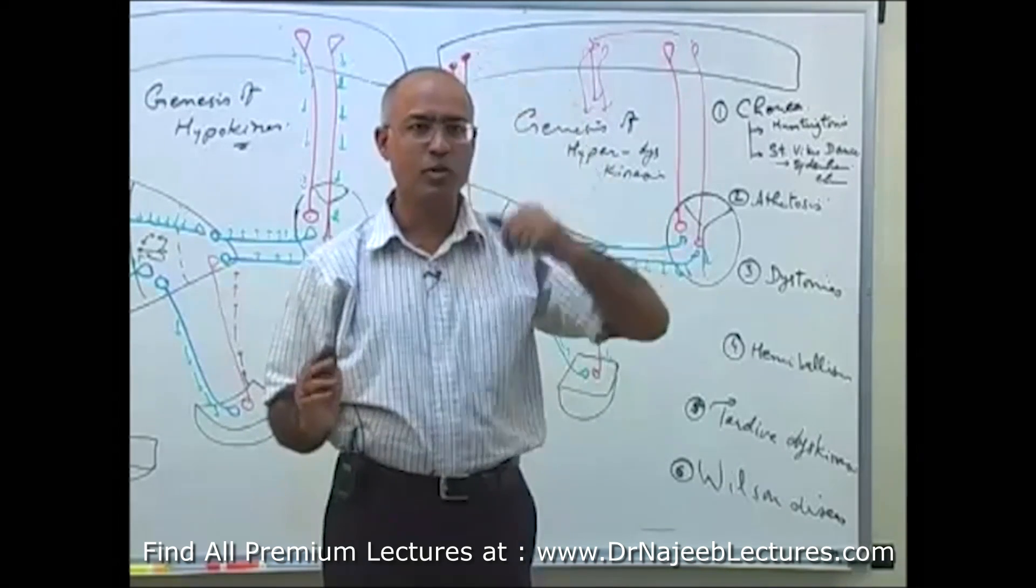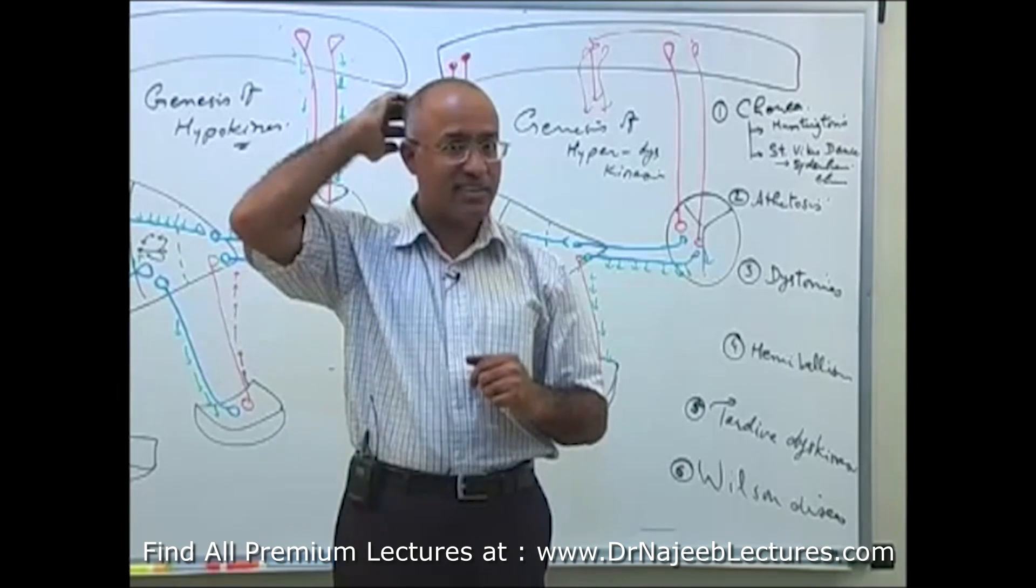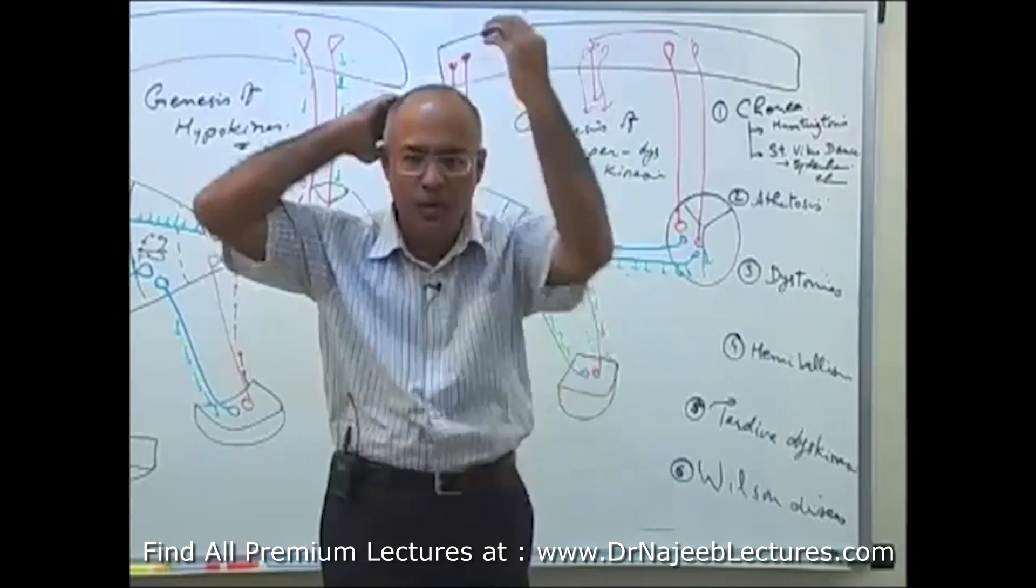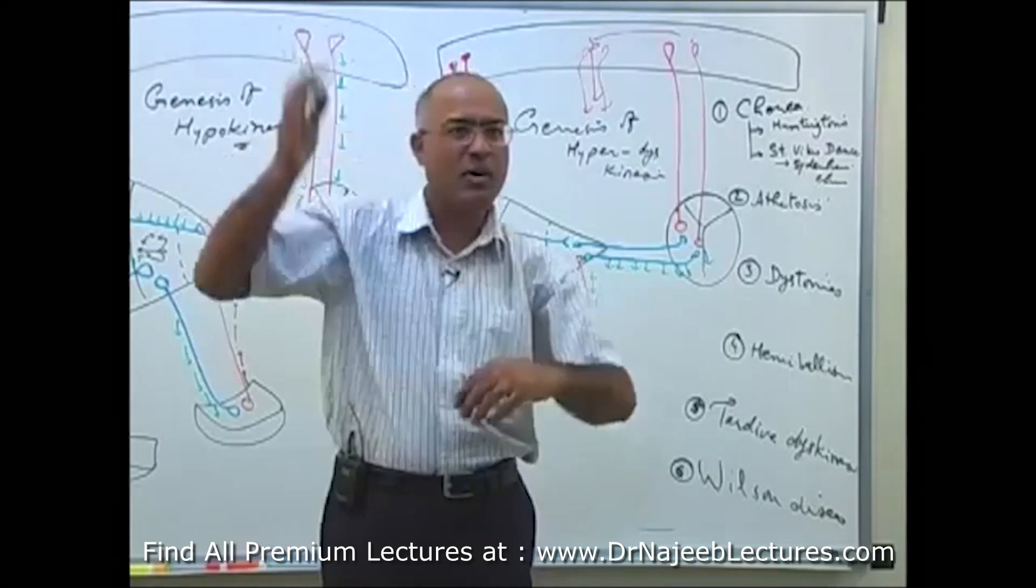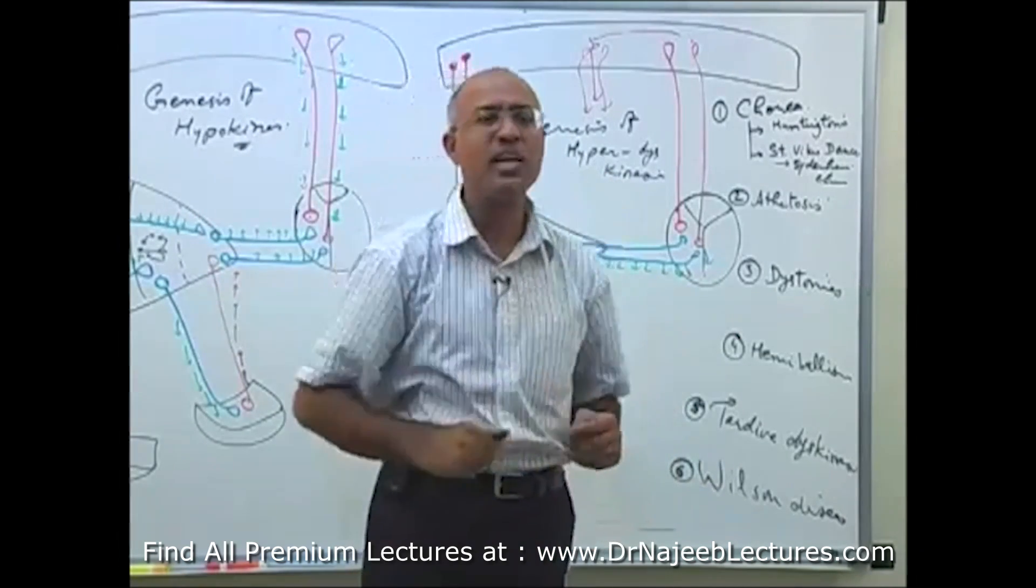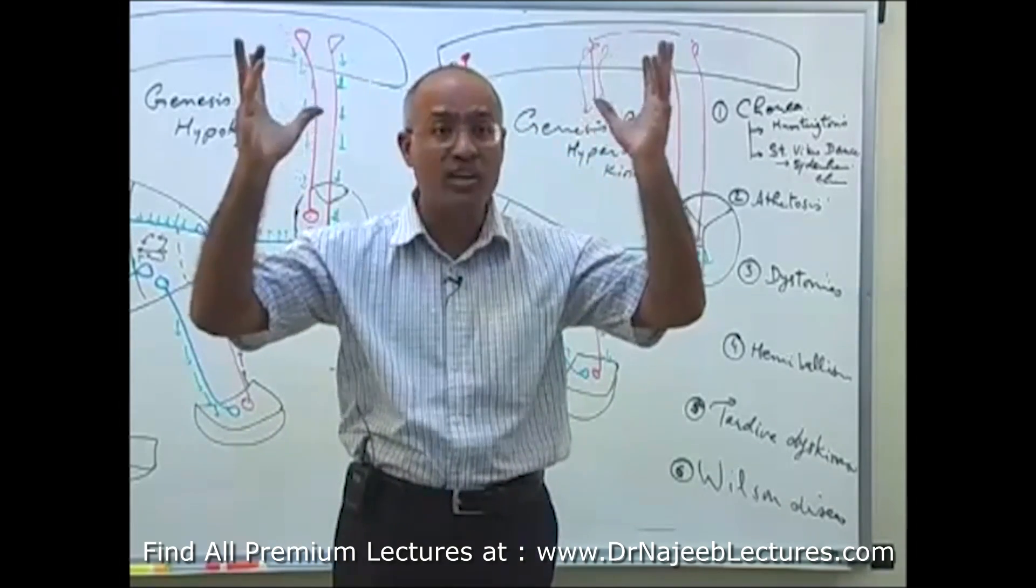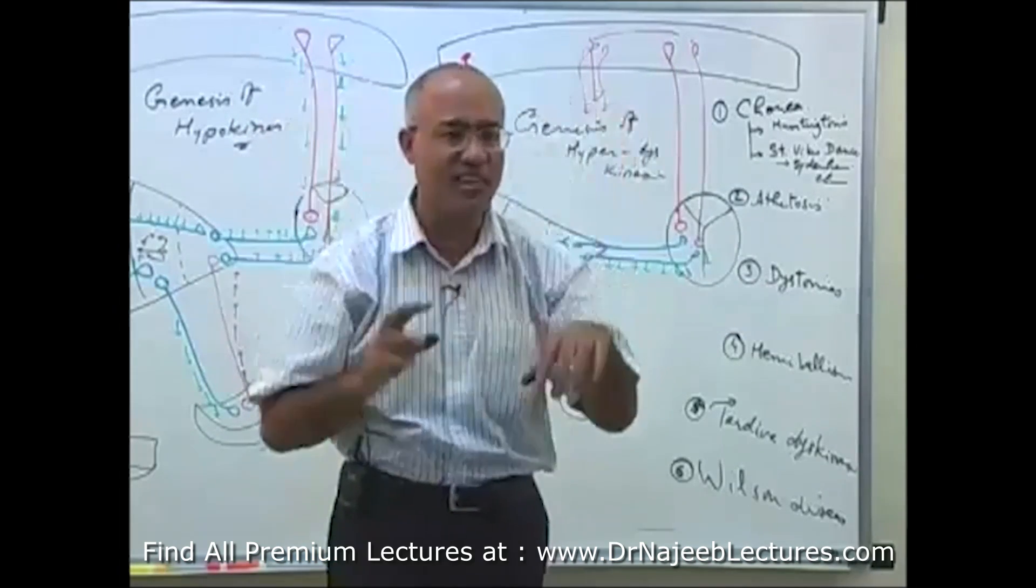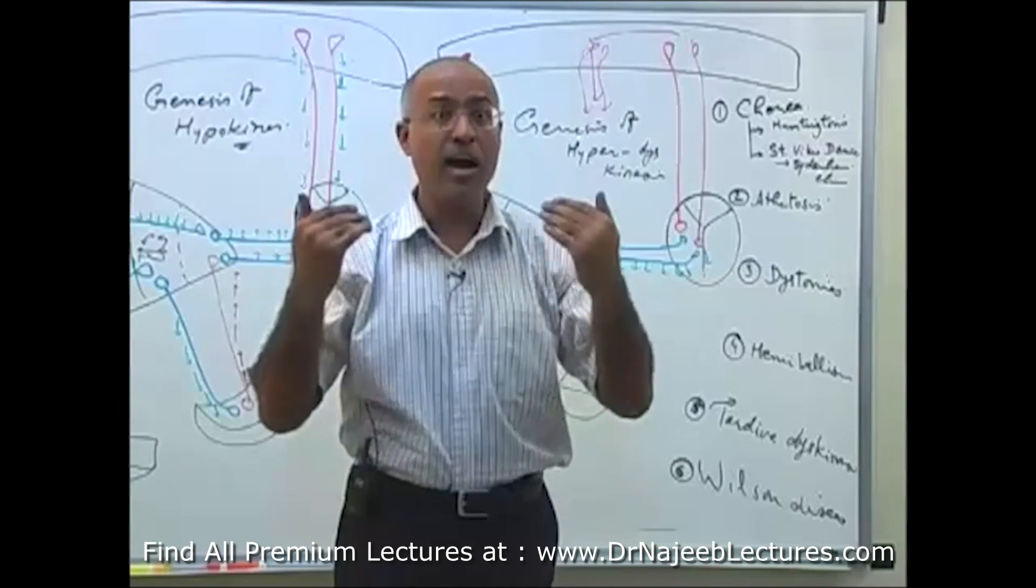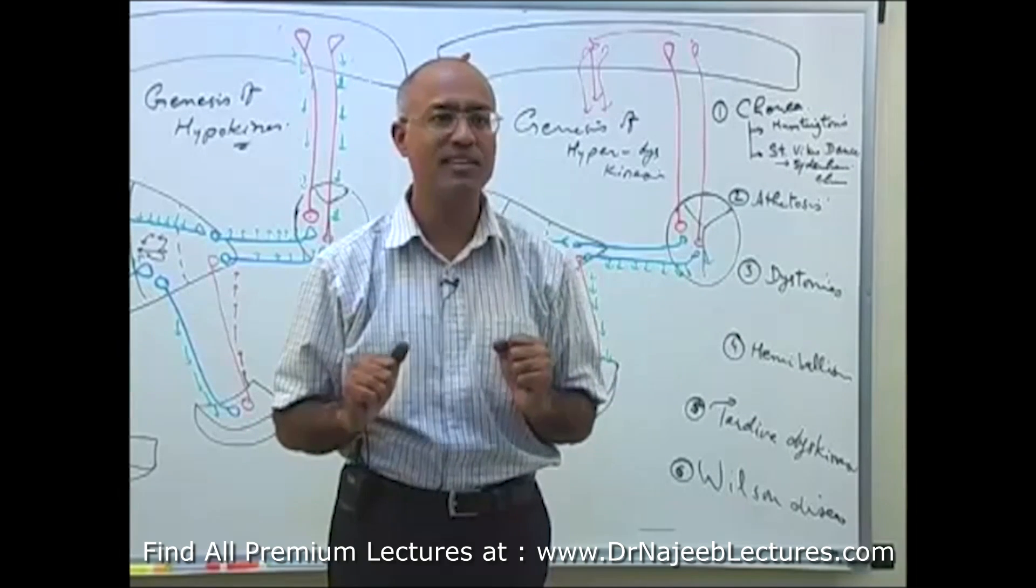Now, if indirect pathway is disturbed, and motor cortex is overstimulated, it may release multiple programs in a haphazard fashion. For example, you are going to salute, but half of the movement, suddenly it goes like this, and then suddenly, another program is leaking, like leaking of the program. Inappropriate release of the program. For scratching here, but you come here, and then suddenly, it goes like this.